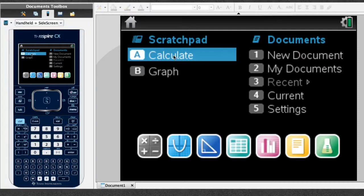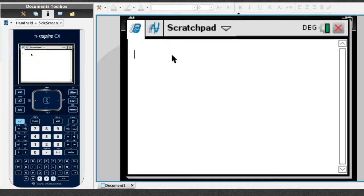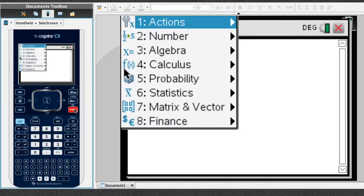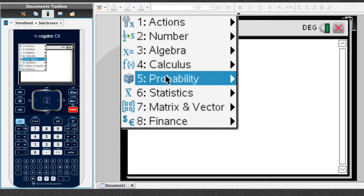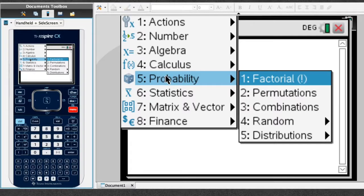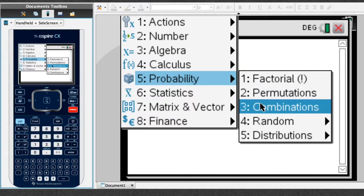So I click on Calculate. Now, to find the binomial coefficient, I go ahead and click on Menu, and I then select the fifth option, Probability. Following that, I select the third option, Combinations, and I click on it.